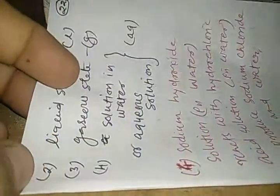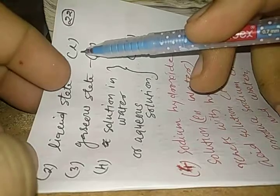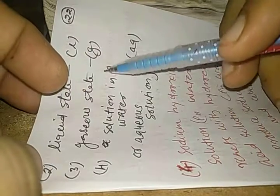Then we can show the liquid state which is represented by bracket L, and the gaseous state which is represented by bracket G.